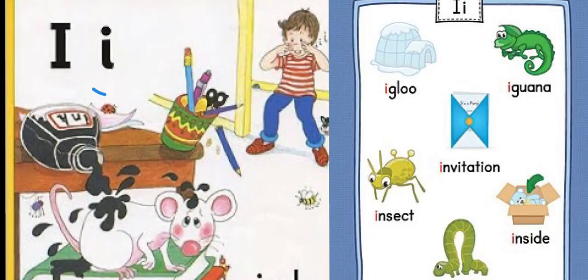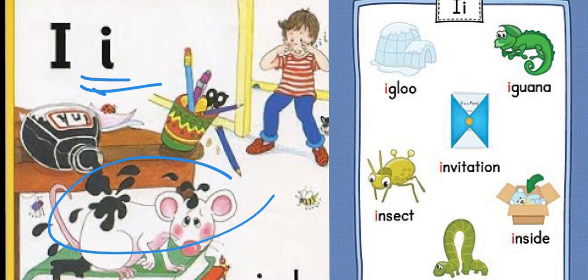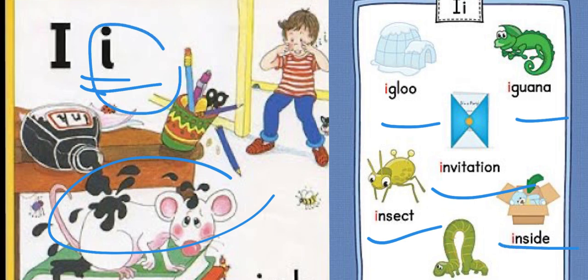And the second letter sound for this week is i, i, for Inky, remember? I, i, igloo. I, i, iguana. I, i, invitation. I, i, insect. I, i, inside. I, i, i.